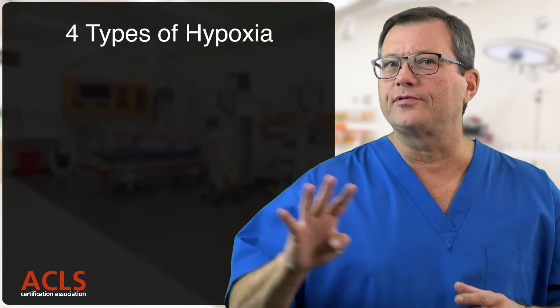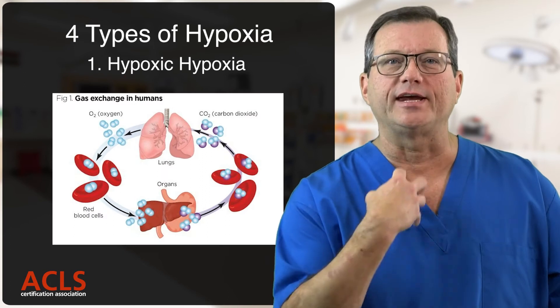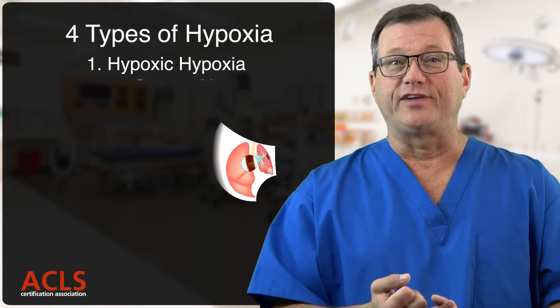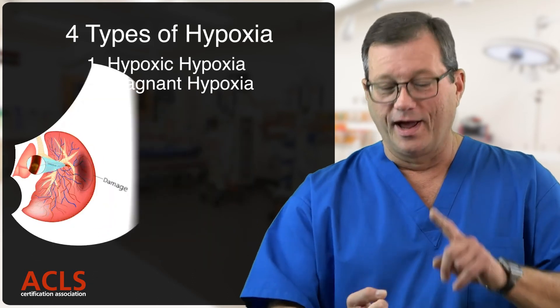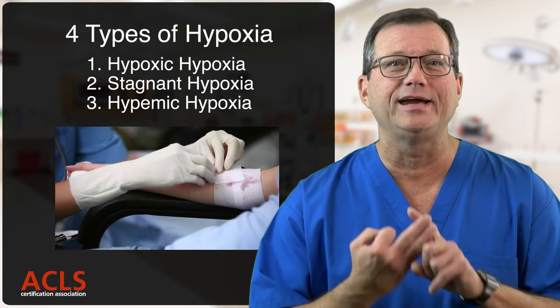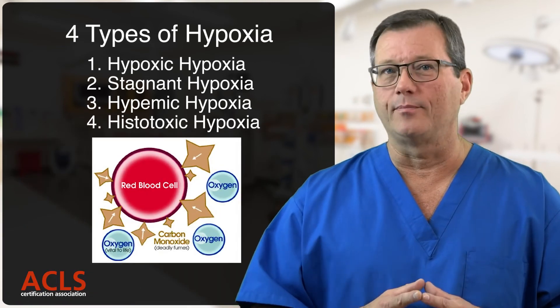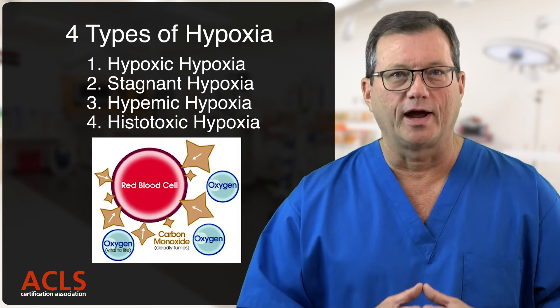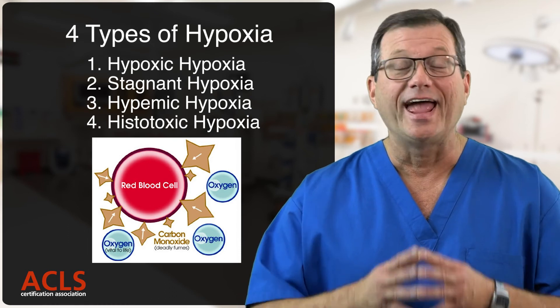So remember, the four types of hypoxia we need to rapidly identify and treat: hypoxic hypoxia — think gas coming in and out; stagnant hypoxia — something obstructing blood flow; hyphemic hypoxia — all of the patient's blood laying on the sidewalk, do they need blood to carry the oxygen?; and last, histotoxic hypoxia — think carbon monoxide, cyanide poisoning, something that's preventing the hemoglobin from picking up oxygen and adequately delivering it to the tissue level. I'm Mark, thanks for watching, I'll see you in the next video.